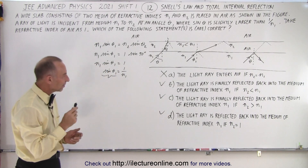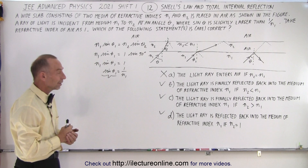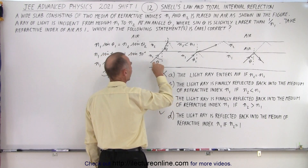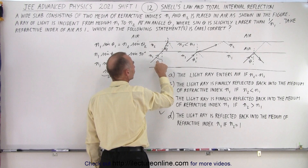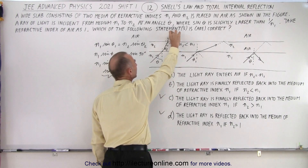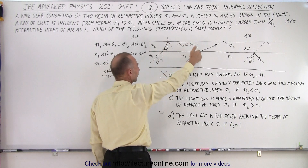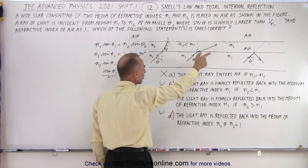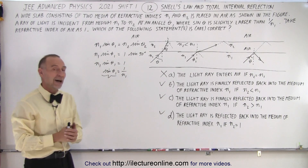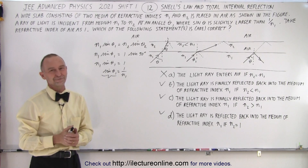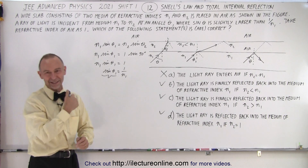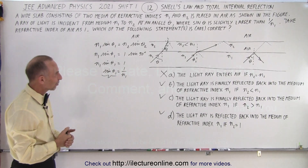So answers B, C, and D are all correct, and A is the only incorrect one. It all comes down to total internal reflection: since sine theta > 1/N1, it doesn't matter what medium N2 you place between air and N1 — whether N2 is larger, equal to, or smaller than N1 — you will always have total internal reflection. That's an interesting result, and that's how it's done using Snell's law and total internal reflection. The whole problem took about six minutes.